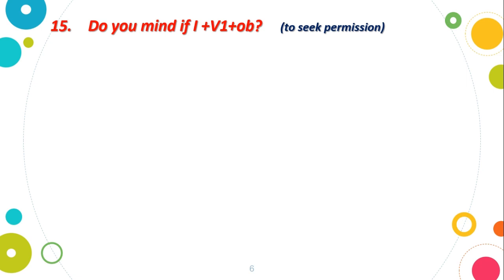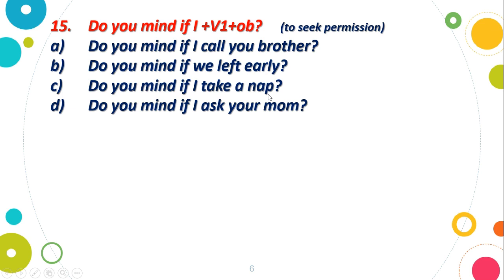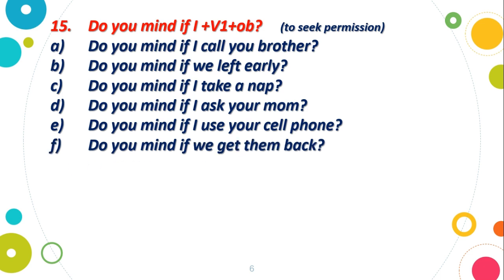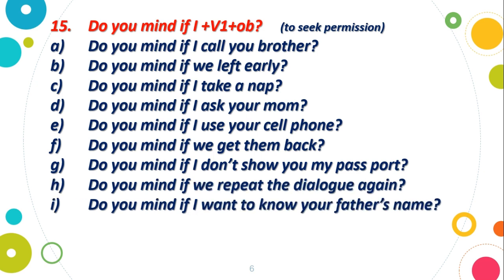Today our last structure 15: Do you mind if. We use this to seek permission. Let's see: Do you mind if I call you brother? Do you mind if we left early? Do you mind if I take a nap? Do you mind if I ask your mom? Do you mind if I use your cell phone? Do you mind if we get them back? Do you mind if I don't show you my passport? Do you mind if we repeat the dialogue again? Do you mind if I want to know your father's name? And do you mind if I call you stupid?